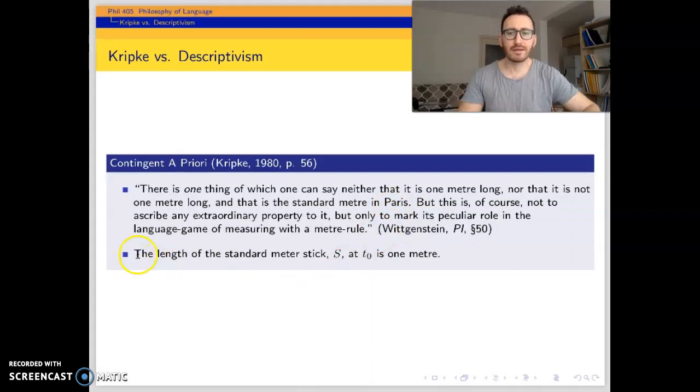And Kripke takes this example, the length of the standard meter stick S at t0 is one meter as an example of contingent a priori propositions. This is an identity sentence or we can analyze it this way. We have one expression and there we have another expression. As you see, this is a definite description and this one is a rigid designator. Let's see its metaphysical and epistemological status.